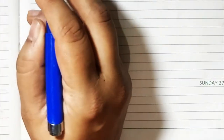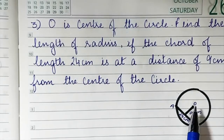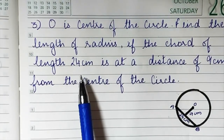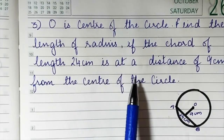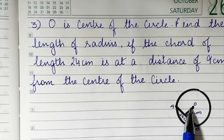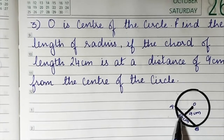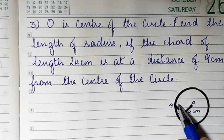Sum number three: O is the center of the circle. Find the length of the radius. The chord of length 24 centimeters is at a distance of 9 centimeters from the center. Half of 24 is 12, so the half-chord is 12 centimeters.